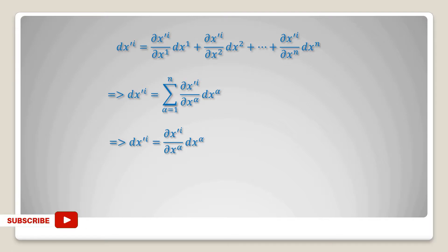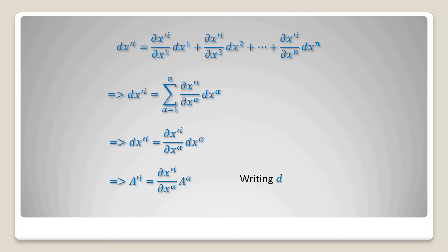So in terms of summation it can be written as dx prime i equals the summation, alpha goes from 1 to n, of del x prime i divided by del x alpha, into dx alpha. By using the summation convention, this implies a prime i is equal to del x prime i divided by del x alpha into a alpha, writing dx alpha equal to a alpha.